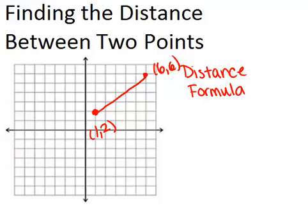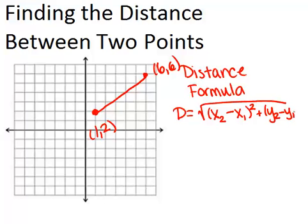Now, the distance formula looks pretty complicated. It says the distance is the square root of the difference of the x-coordinates, x2 minus x1, squared, plus the difference of the y-coordinates squared, y2 minus y1 squared. But, once you know how to use it, it's not too bad.